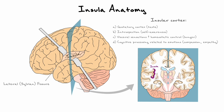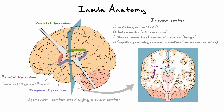The insula is responsible for housing the gustatory cortex. It is also reportedly responsible for our sense of self-awareness, our visceral sensations, homeostatic control, and our ability to process emotions such as compassion and empathy. Because of its hidden nature, there is an anatomical term called the operculum that represents the cortex overlaying the insular cortex. We can find a piece of operculum in the frontal, parietal, and temporal lobes.